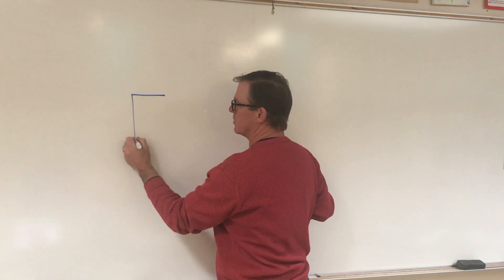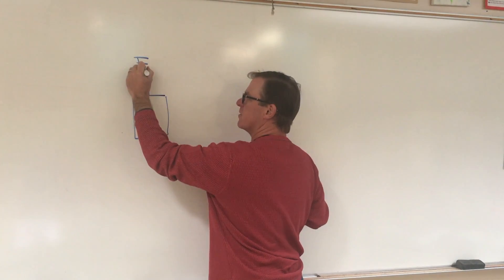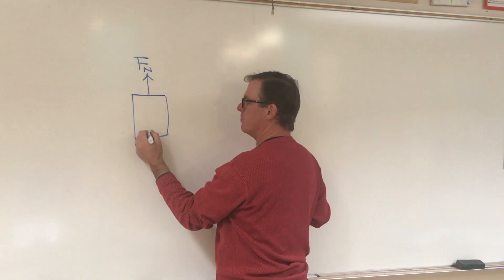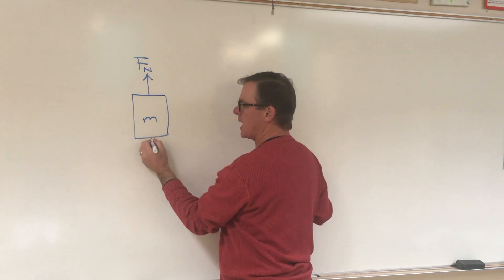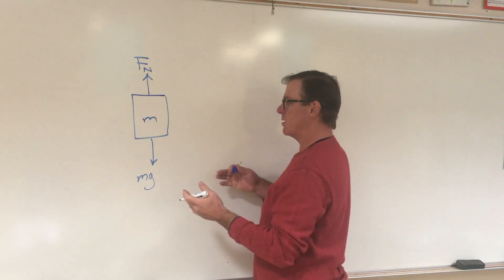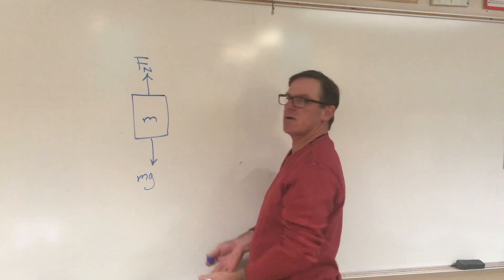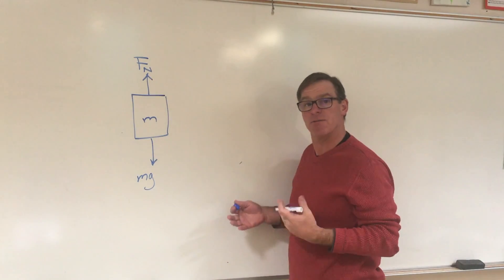You'll recall that we introduced this idea that the upward force, which we're calling F normal, and the downward force, which we always know to be weight mg, that if one of these is larger than the other, if they're not the same, then the object is accelerating in the vertical direction.